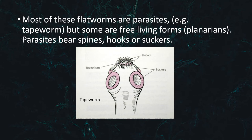Most of these flatworms are parasites, like tapeworms, but some are free-living forms. Parasites bear spines, hooks, or suckers, as you can see in this diagram of a tapeworm.